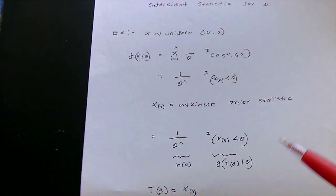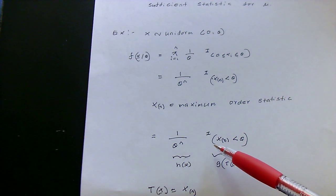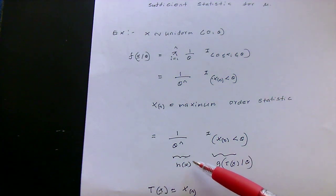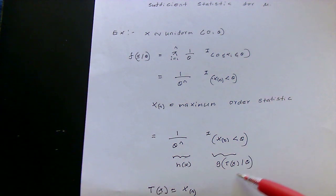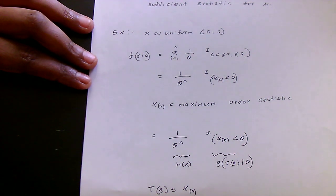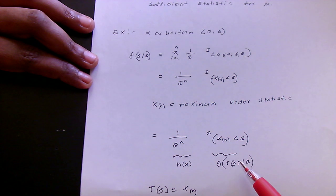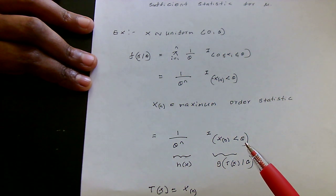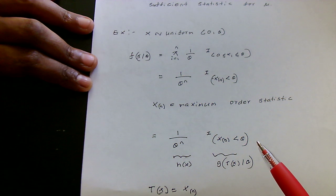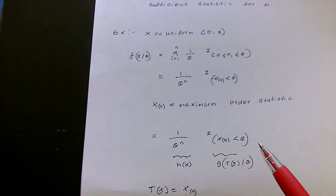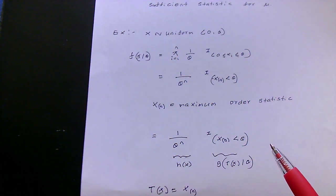We can rewrite this expression as 1 over theta to the power n times the indicator function of x(n) given theta. We have written our joint probability density function as a product of two functions: the first function is independent of x, and the second depends on theta only through the maximum order statistic x(n). So in this case, our sufficient statistic is the maximum order statistic, x(n). In our next video, we plan to show more examples of how to find sufficient statistics based on the factorization theorem. Thank you.